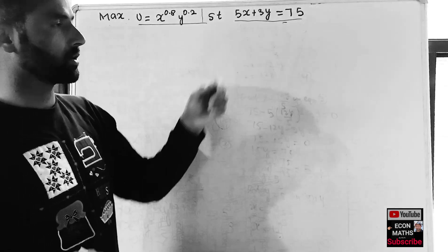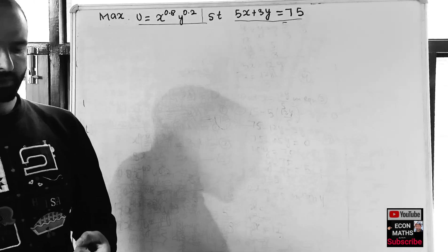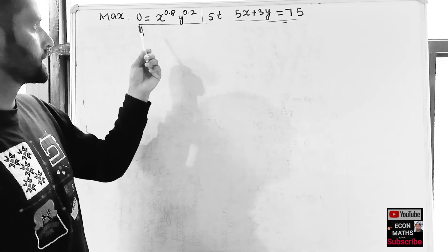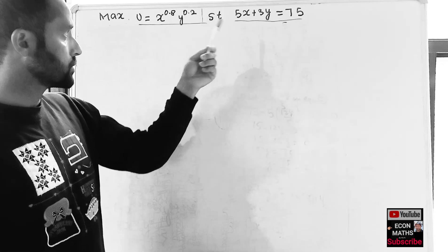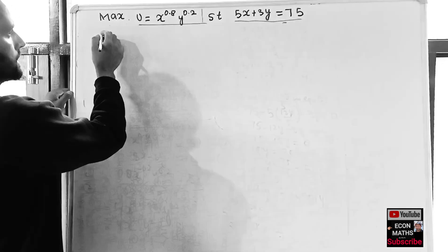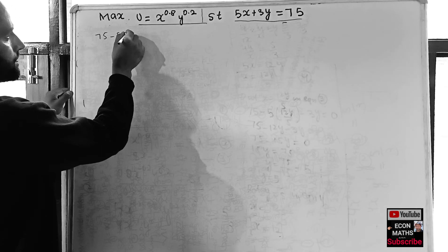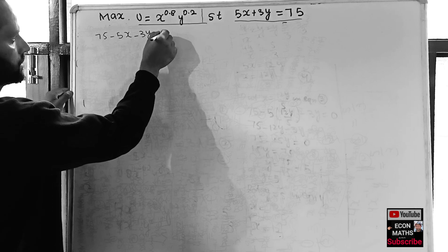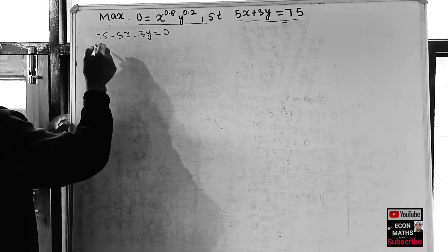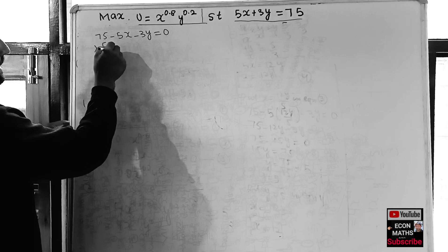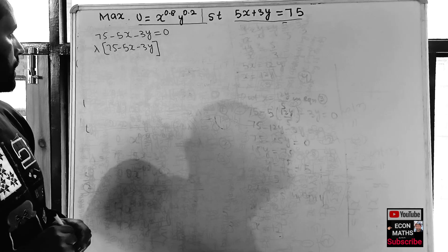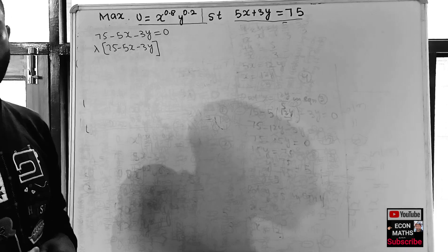To solve this using the Lagrange method, we will first set the constraint equal to zero, giving us 75 - 5x - 3y = 0. After that, we will multiply this constraint by lambda, giving lambda times (75 - 5x - 3y).